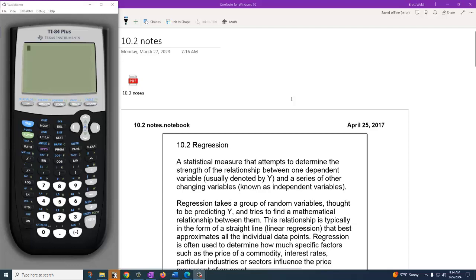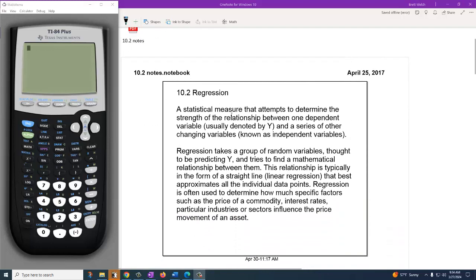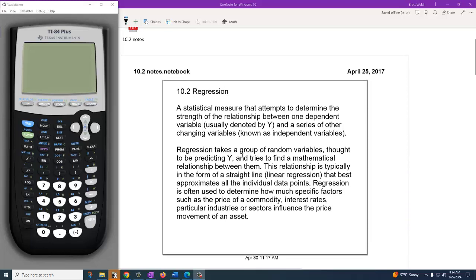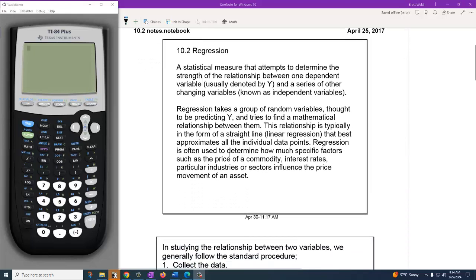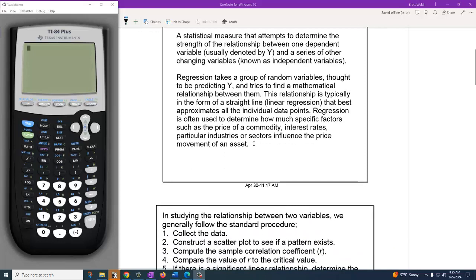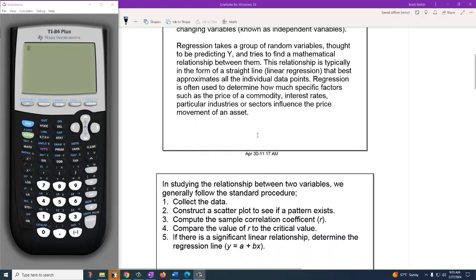Well, once we determine that there is a linear relationship, if we know that a linear relationship exists because the r value is really high, then what? And so what we have to understand is that there's a regression process that our calculator can do for us that's going to build an equation, a mathematical relationship between them that helps give us our x and y factors. Our calculator can do several different regressions. We are going to focus specifically on linear regressions.